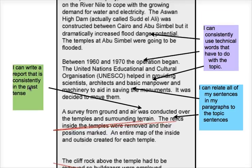The second criterion is writing a report that is consistent in the past tense. Again, words like 'was' and 'were' — those kinds of words. We need to ensure that the text is in the past tense.